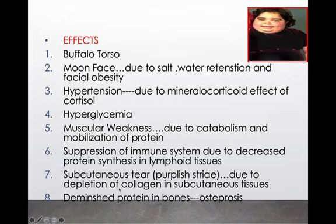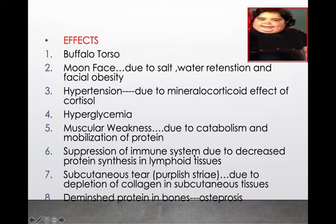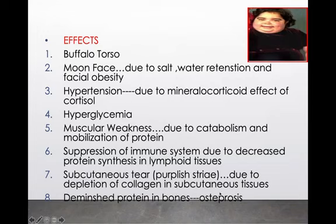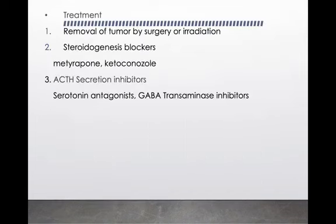There are also subcutaneous tears or purple striae due to depletion of collagen — a protein — in subcutaneous tissue. As cortisol mobilizes protein from extra-hepatic to hepatic tissue, depletion of collagen causes tears; blood leaks giving a typical purplish color — purplish striae. Due to diminished proteins in the bones from the same mechanism, there is weakness of bone, which is osteoporosis.